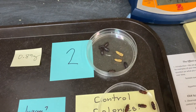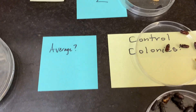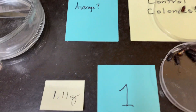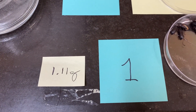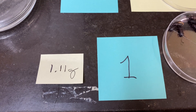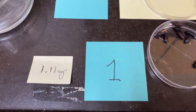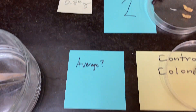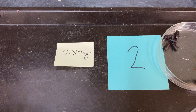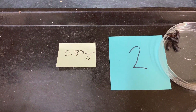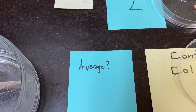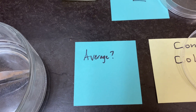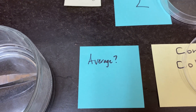The mass for the control colonies — control number one is 1.11 grams, and control number two is 0.89 grams. Make sure you calculate the average of the two. I've noticed a few people getting that average wrong, so double-check that you know how to do it.